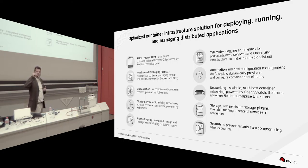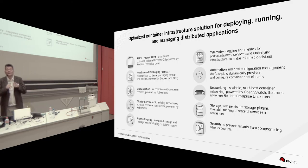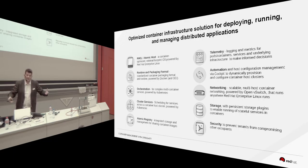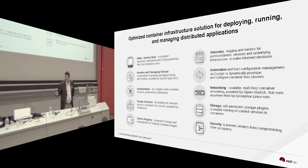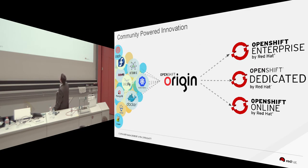For storage, Kubernetes includes ETCD, a key-value store that holds all configuration data. But applications need more storage beyond that — since containers have no local storage, it needs to be somewhere else. Therefore we have software-defined storage included in OpenShift.